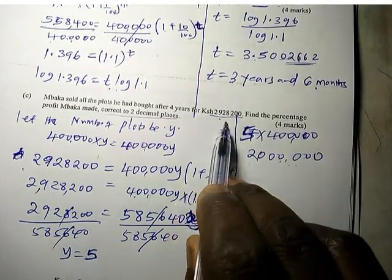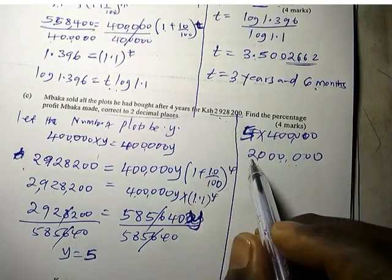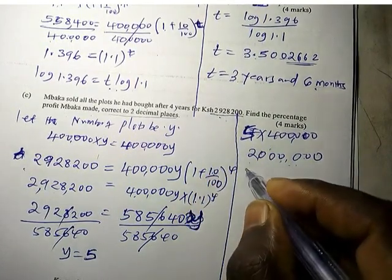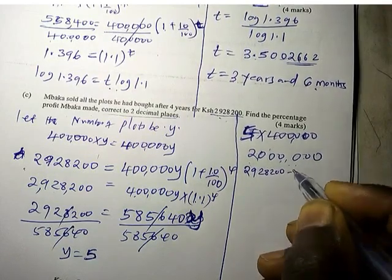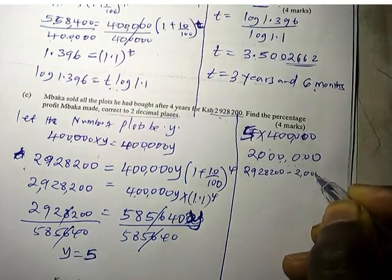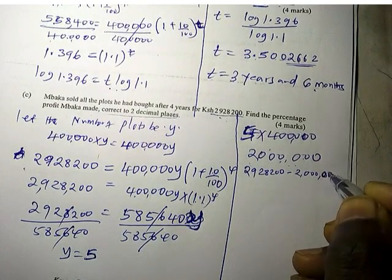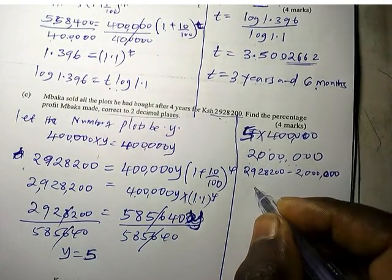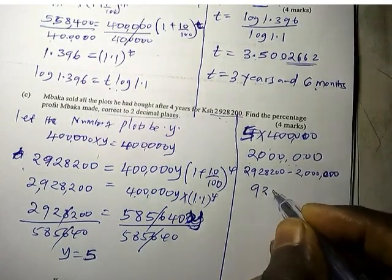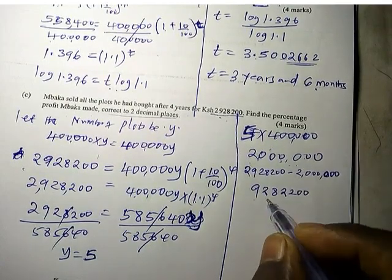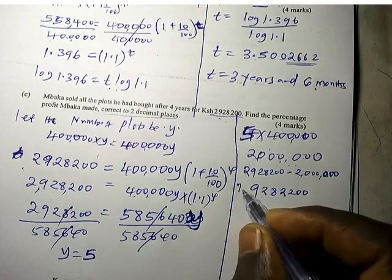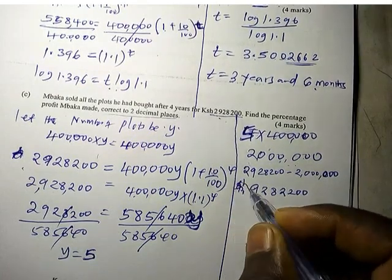So he sold this one. We can now get the profit. Profit equals 2,928,200 minus 2 million, which gives us 928,200. So this is the profit in Kenya Shillings.